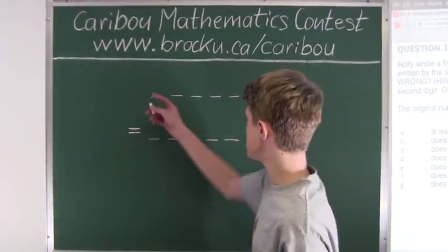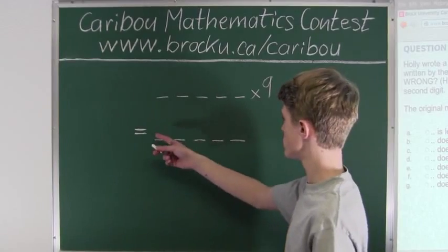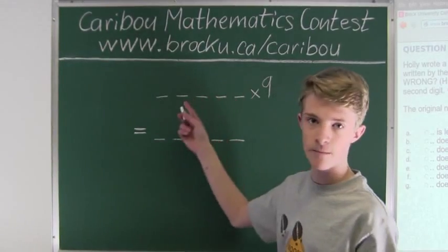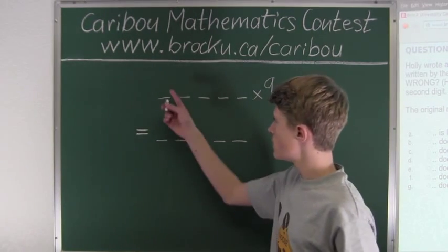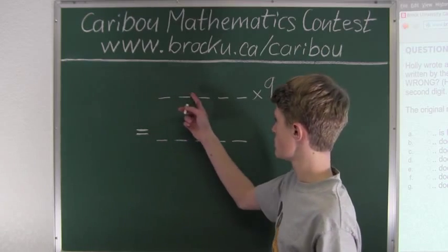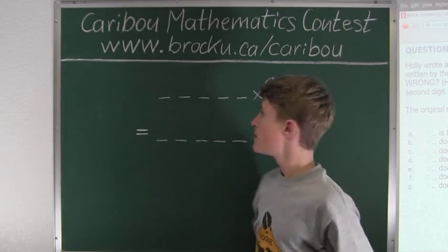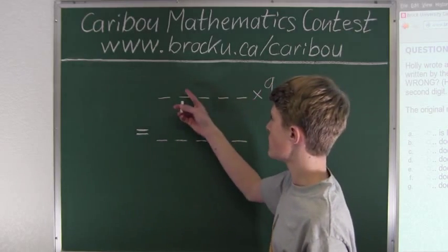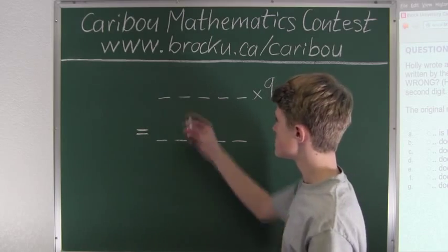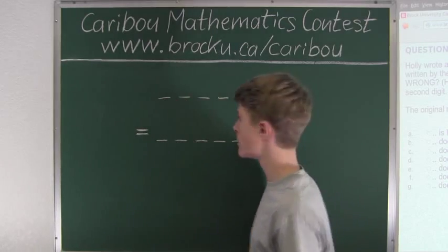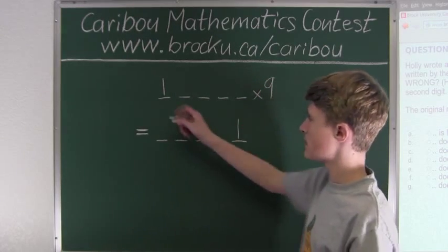Let these be the 5 digits of the first number, and then multiply by 9 to obtain the second number, which is the reverse. Looking at the first digit: it obviously cannot be 0, or else it would only be a 4-digit number. It cannot be 2 or greater, because 9 times 2 already gives a carryover of 18, resulting in 6 digits. So the first digit must be 1, which means 1 must also appear at the end of the reversed number.